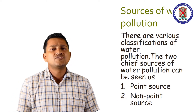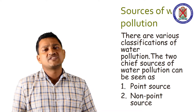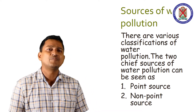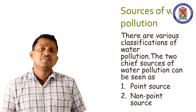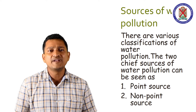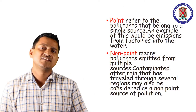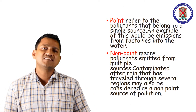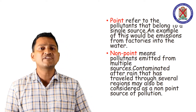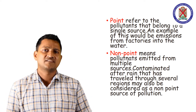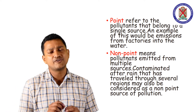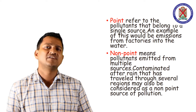Next we discuss about the different sources of water pollution. The sources are mainly classified into two groups: point source and non-point source. Point source refers to pollutants that belong to a single source. Examples of this would be emissions from factories into the water, or an outlet of treatment and wastewater coming to a particular point in a river.